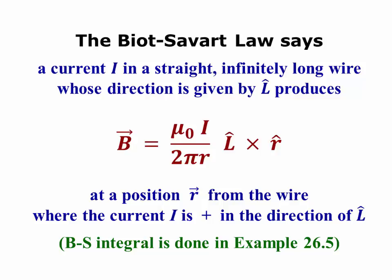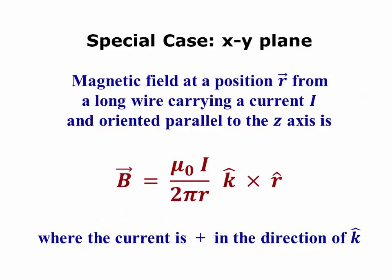What it results in is that the current i in a straight infinitely long wire, where the wire's direction is given by a unit vector L-hat, can be found from mu naught i over 2 pi r, L-hat cross R-hat, where R and R-hat come from the position vector R. That position vector points from the wire where the current is flowing to the field point, and our current is plus if it's in the same direction as L-hat. We'll work in the special case of the x-y plane in cylindrical coordinates, that is R-theta-z, or x-y-z coordinates.